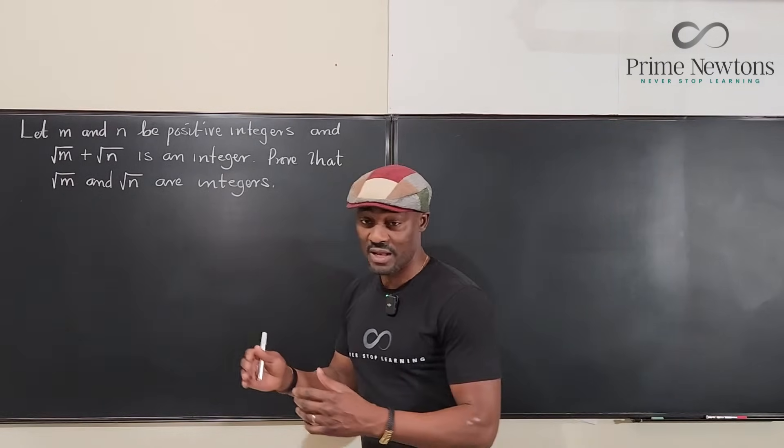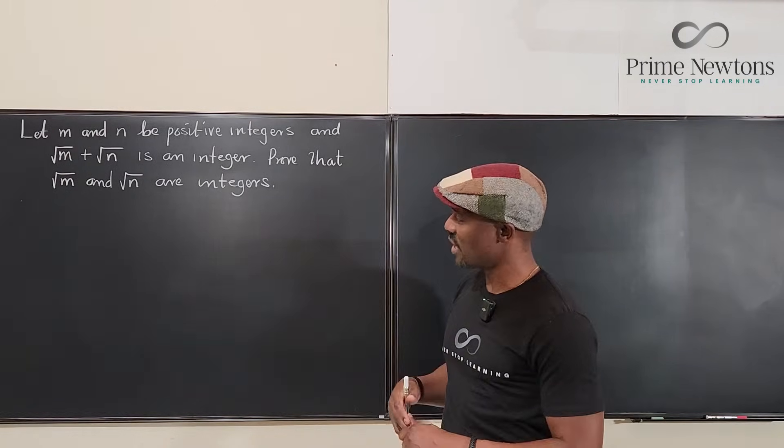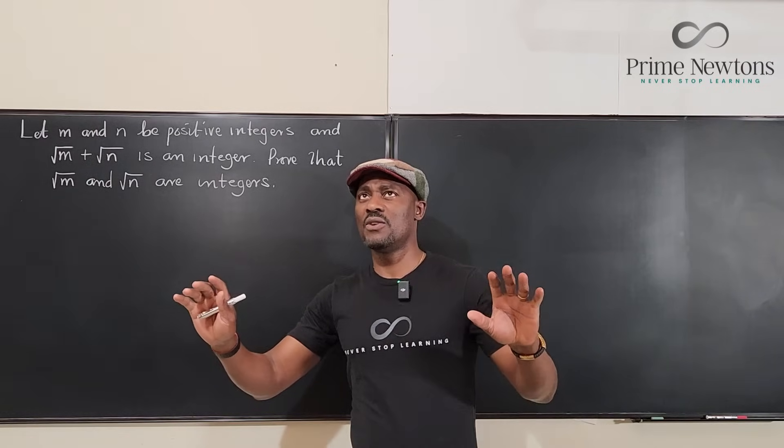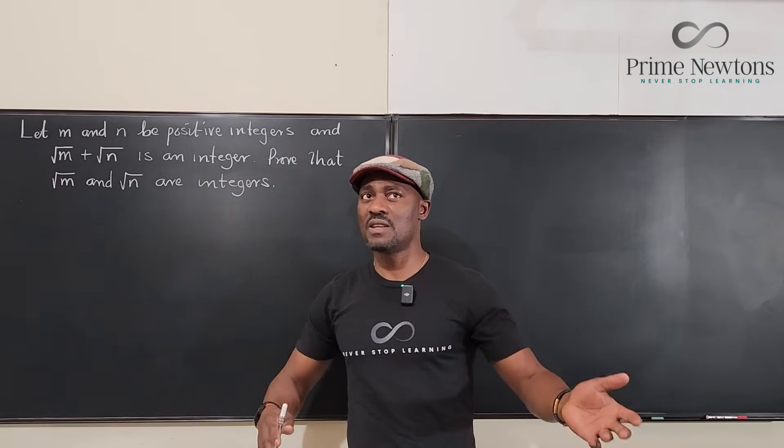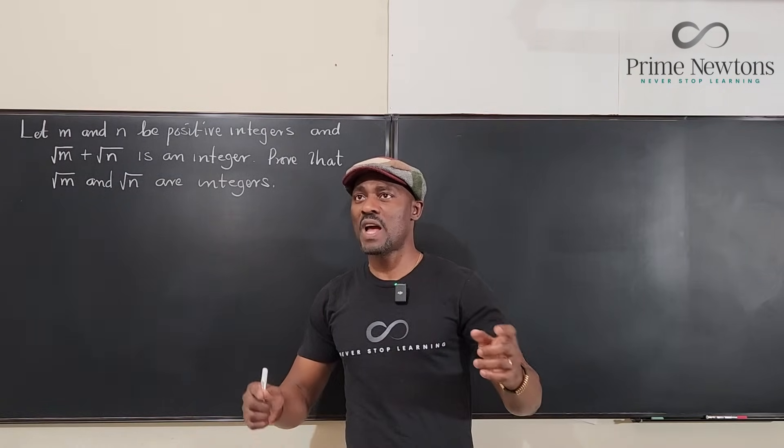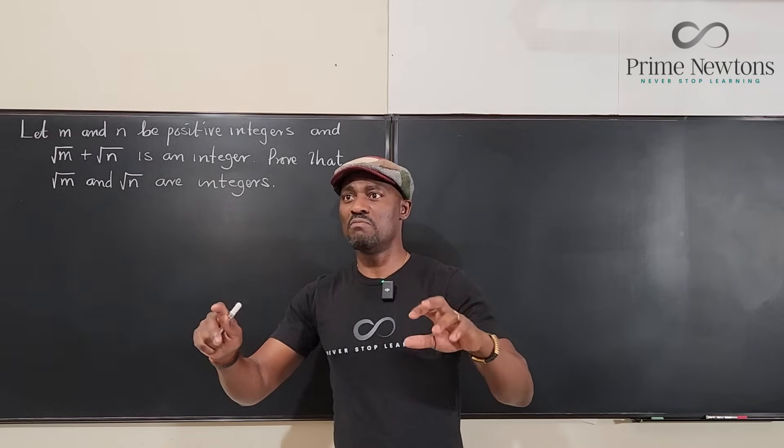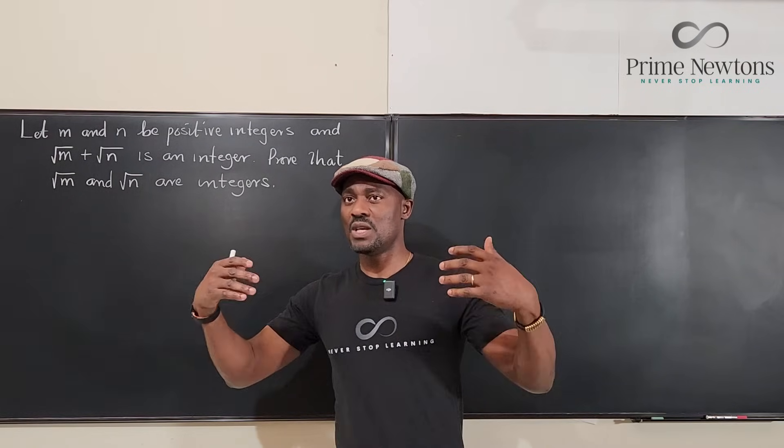If you pay attention to what the question looks like, you have two positive integers and then you take their square roots and add them together and you get another integer. You want to prove that each of those square roots must in themselves be integers.